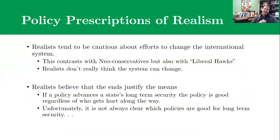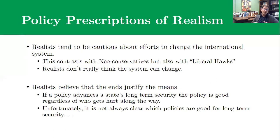One last element to talk about with realism is the policy prescriptions that come from it. One thing we focus on with theories is what do they advise us to do? Realists, although focused on war and security, are not really warmongers. They tend to be very cautious about efforts to change the international system because of their pessimism — you can't really fix things, it's anarchic, it's the nature of the system. Rather than trying to rebuild the international system in some new model, realists are skeptical you're going to be able to do that. They also think about such efforts in terms of potentially wasting resources, so they want to conserve resources for things that are absolutely core and important to the state.